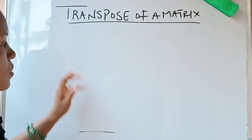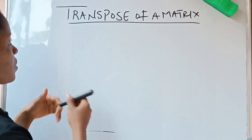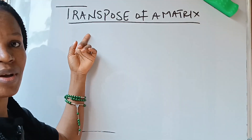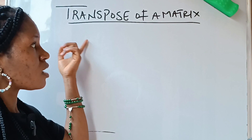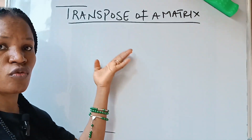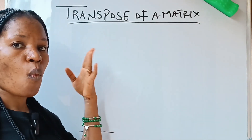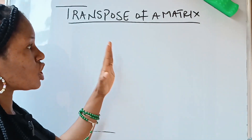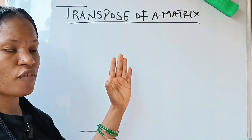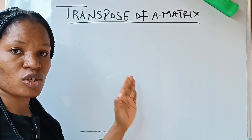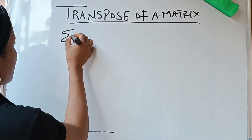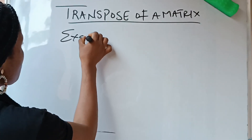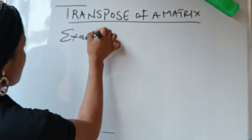To get the transpose of a matrix — what is the transpose of a matrix? It is the new matrix you form when you change the rows of a matrix to columns. Let's start with an example so that you understand.